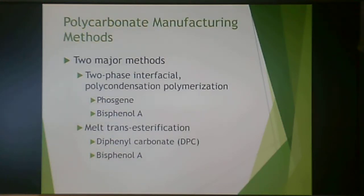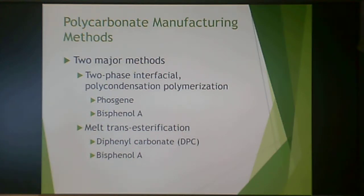There are two major methods to produce polycarbonate: a two-phase interfacial polycondensation polymerization, and a melt transesterification. The first uses phosgene and bisphenol A, and the melt transesterification uses diphenyl carbonate and bisphenol A.